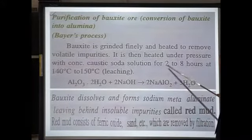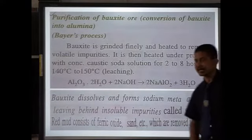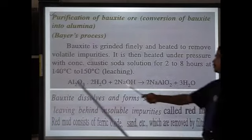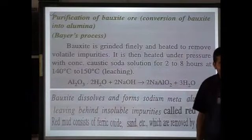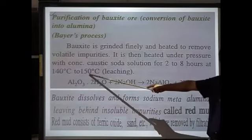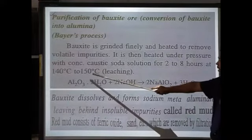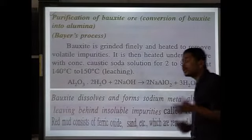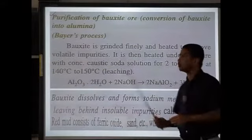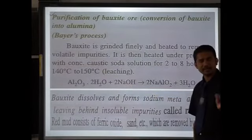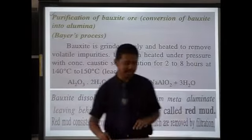The powdered bauxite is placed in concentrated sodium hydroxide solution for 2 to 8 hours, and heated at 140 to 150 degrees Celsius. On doing so, bauxite dissolves in the sodium hydroxide solution. Caustic soda (sodium hydroxide) solution is the solvent for concentrating bauxite ore.